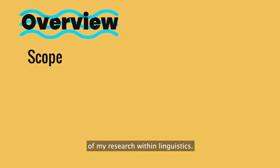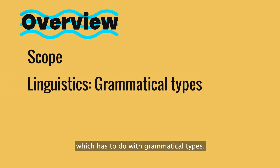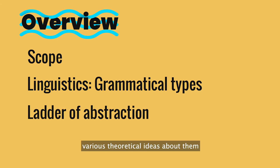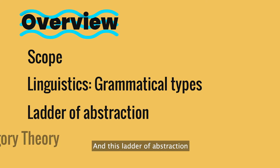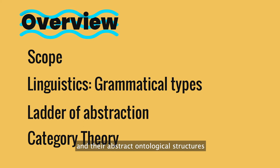I will go through four points in this video. In the beginning, I will quickly delineate the scope of my research within linguistics. Then I will introduce my research topic in more detail, which has to do with grammatical types. Next, I will introduce an important observation about grammatical types in human language — various theoretical ideas about them can be neatly put on a five-level ladder of abstraction. This ladder of abstraction will naturally lead us to the fourth and main point: we can think about grammatical types and their abstract ontological structures from a category theoretic perspective.